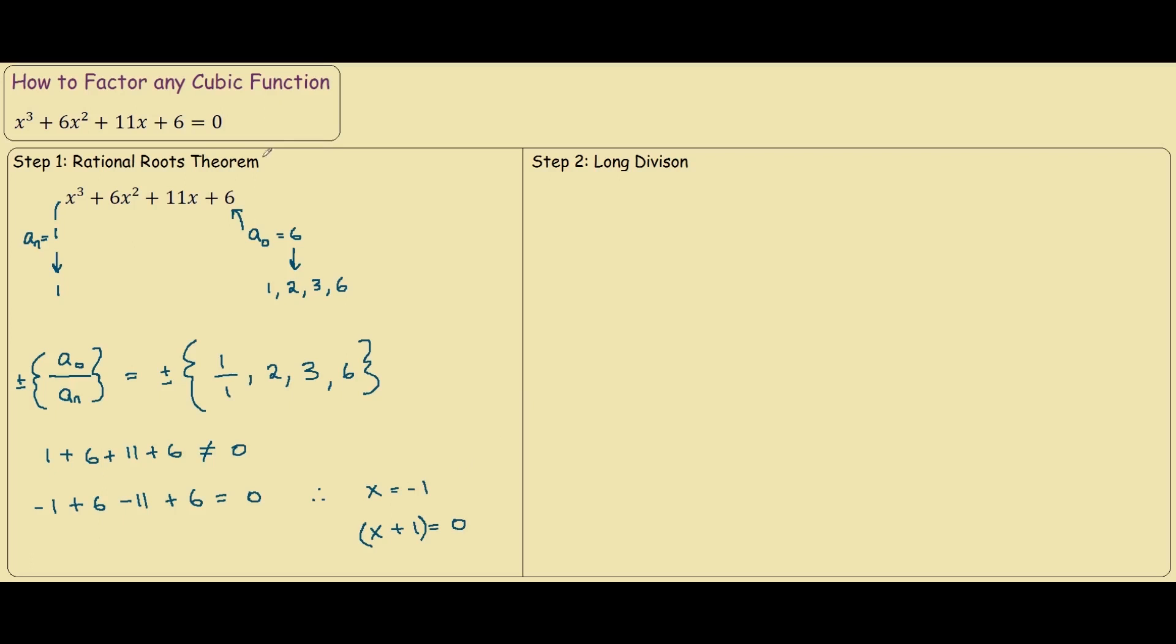Now that we know one of our factors for our cubic function, we can use it to find the other factors. So, we do long division. We have x plus 1, and inside is our cubic function. And if you don't know the steps to do long division, this is how you do it.